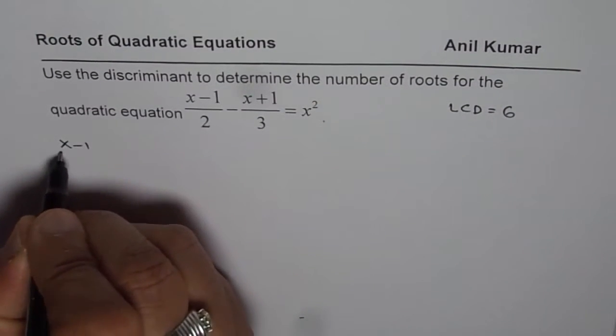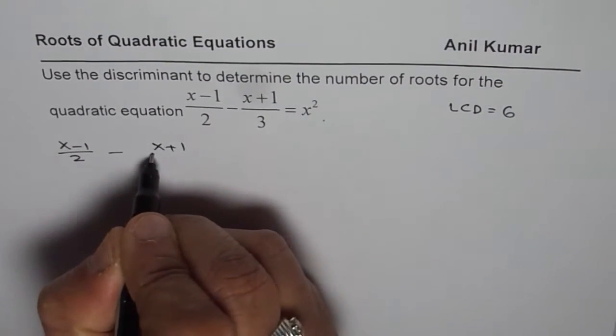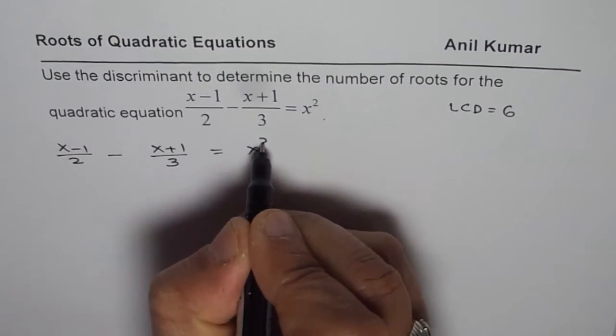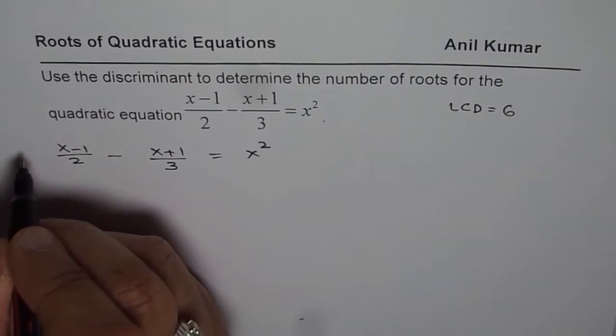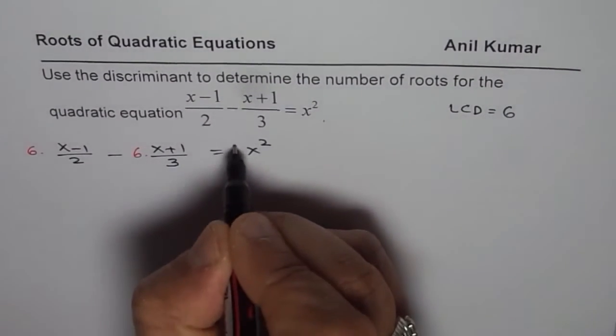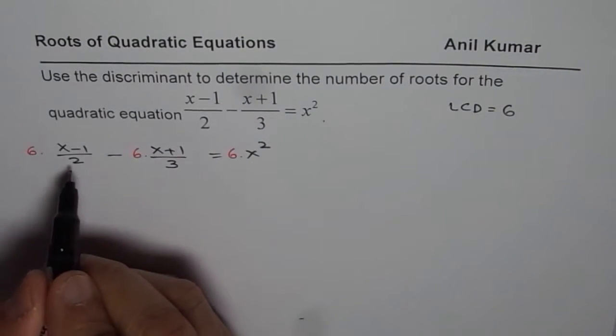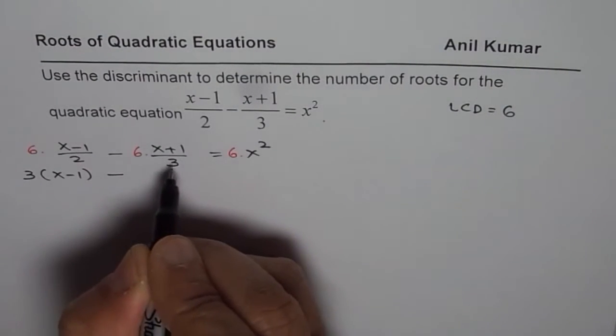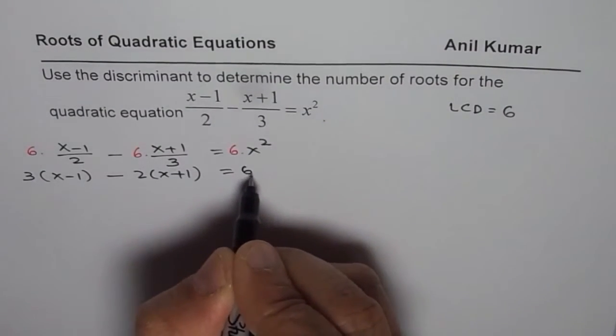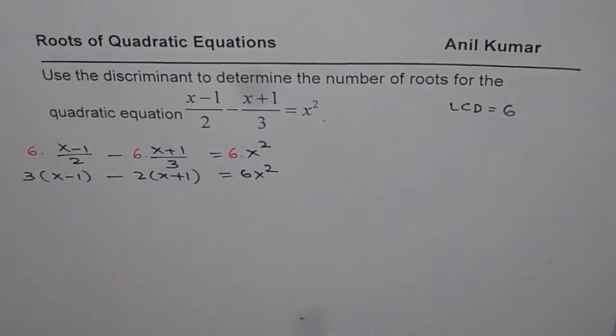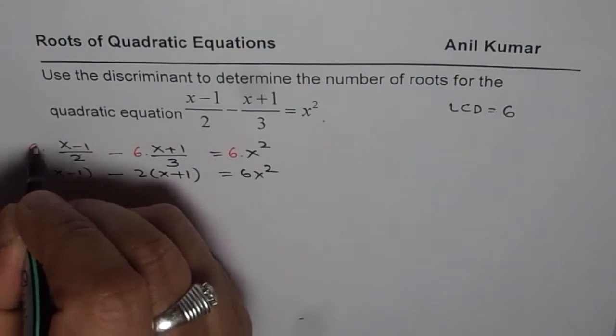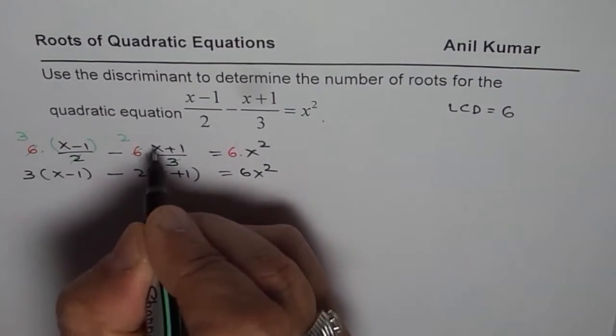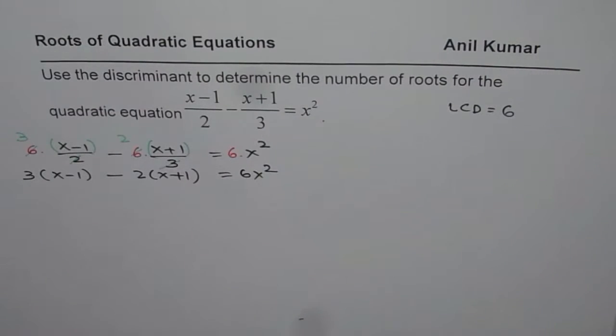Let us begin by writing the equation which is x minus 1 divided by 2 minus x plus 1 divided by 3 equals x squared. To get rid of fractions, we have to multiply each term by 6. This could be written as 3 times x minus 1 minus 2 times x plus 1 equals 6x squared. How do you get 3? Because 2 divides into 6 three times and 3 divides into 6 two times.